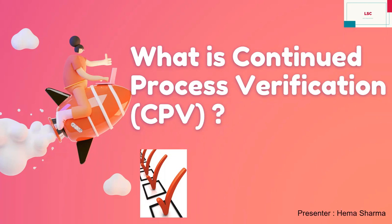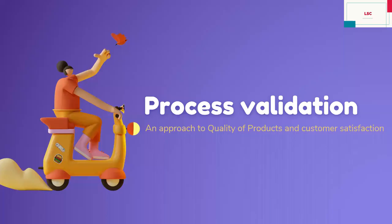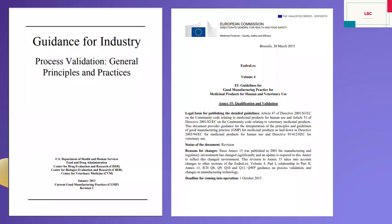To understand CPV, we have to see process validation first. So what is process validation? I'm not going to just dictate the definition of process validation. Process validation is an approach to quality of products and customer satisfaction — if we are going to sell our product, we have to confirm first the quality and efficacy so that customer satisfaction and customer health can be achieved.